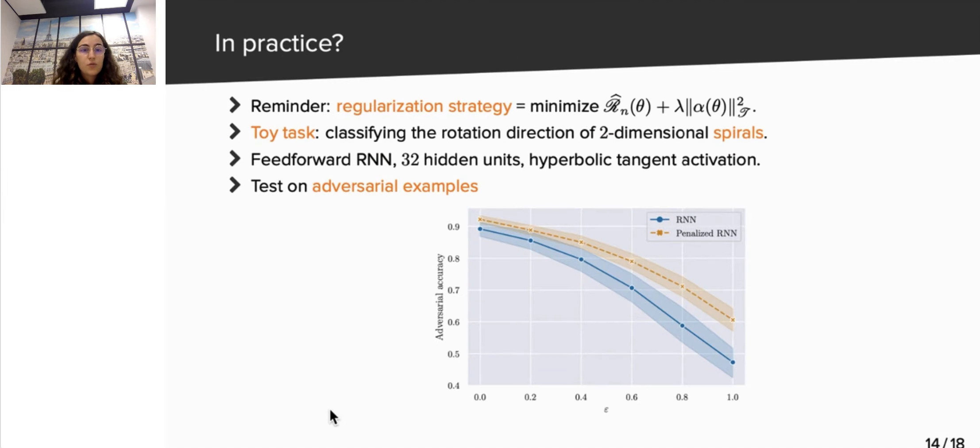Going back to practical matters, recall that this result suggests the following regularization by the RKHS norm. However, we have applied this regularization to a toy task, consisting of classifying two-dimensional spirals. We compare the adversarial accuracy of the RNN trained with and without the regularization. We observe that the accuracy is higher in the regularized case. We stress that this is only an illustration that our approach is reasonable, but much work remains to be done to leverage this theory to applications.